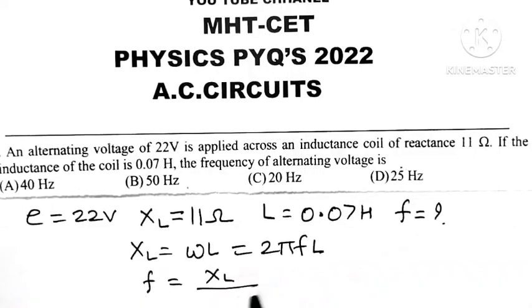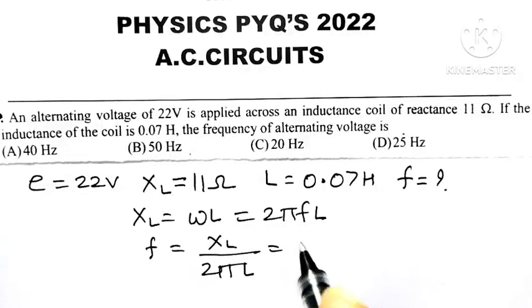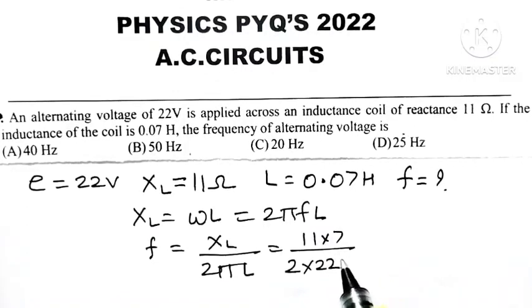f equals XL divided by 2πL. XL is 11 divided by 2 times π. Since π equals 22/7, the 7 comes to the numerator. The value of inductor L is 0.07.